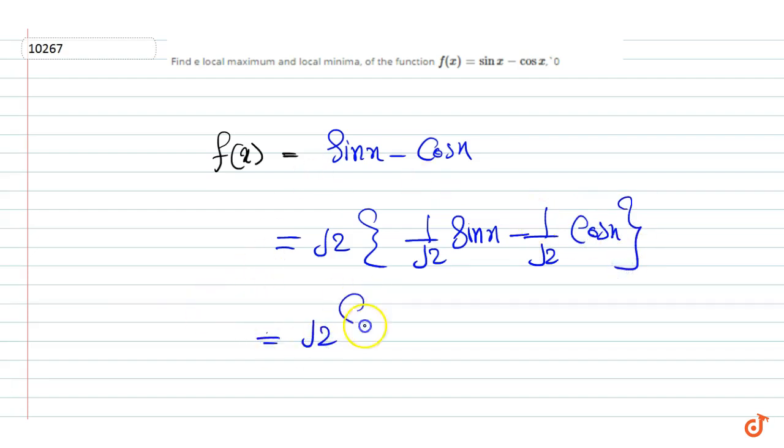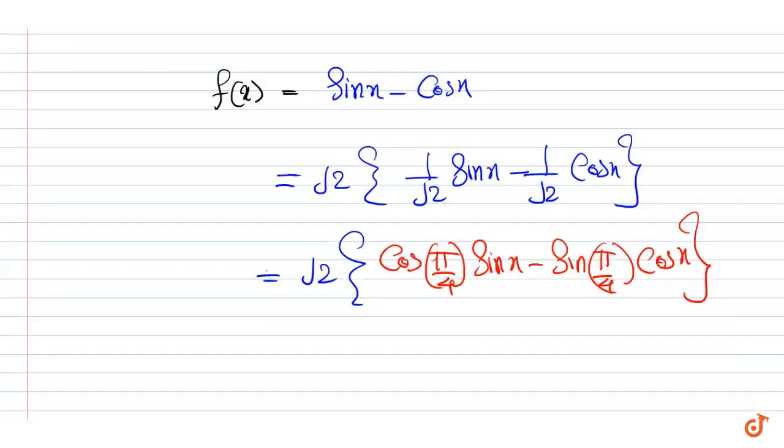This equals root 2 times (cos(π/4) sin x - sin(π/4) cos x), which equals root 2 times sin(x - π/4).